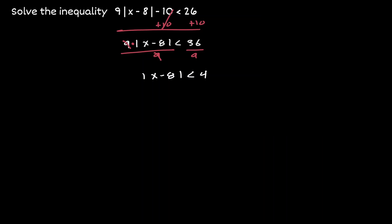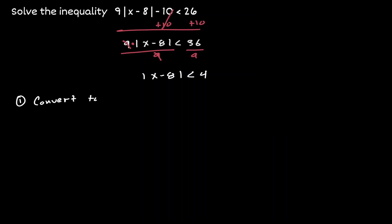Now that we have isolated the absolute value, we can start with the procedure of solving the inequality. The first thing we will do is, instead of working with an inequality, we're going to work with an equation. So let's convert this into an equation: the absolute value of x minus 8 equals 4.